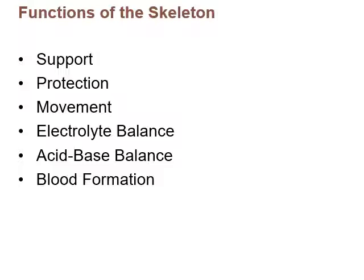Acid-base balance is another function. Bone can be used by breaking down or absorbing electrolytes involved in acid-base balance, as these salts can act as buffers to neutralize acids and bases — we'll talk more about that next semester. Then we have hematopoietic tissue, found in the red marrow of the bones, which makes up all your blood cells — red blood cells, white blood cells, and platelets all come from areas inside the bone that have red marrow.